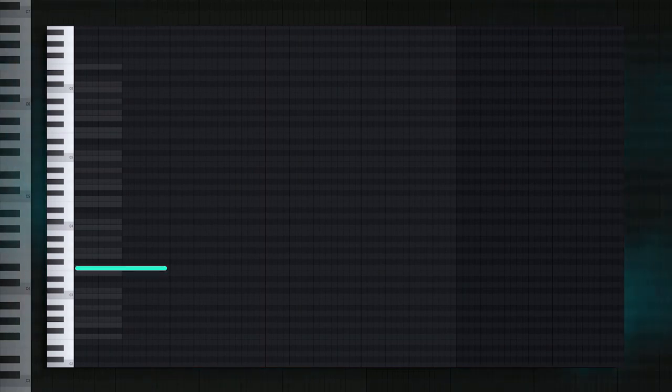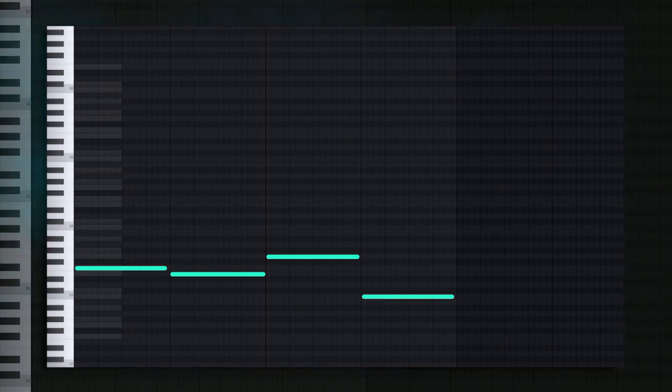Now add one note here on the third note of the scale. Just trust me. Now right after that, add a note here on the second of the scale. And now this is going to be the base of our chord progression. Now simply add two more notes that sound good to you. I will add these two. This is what we have so far.